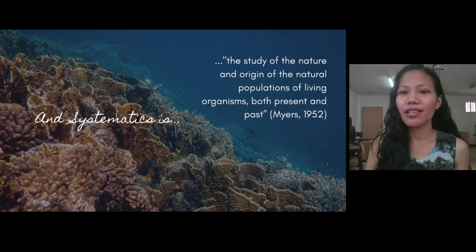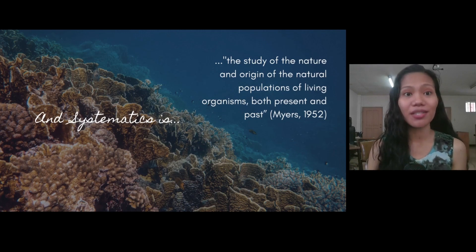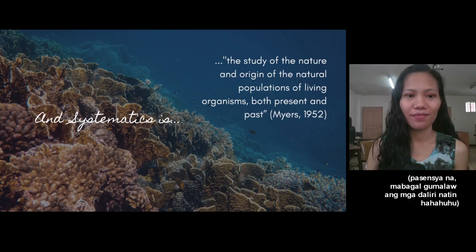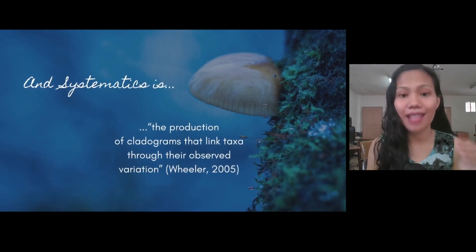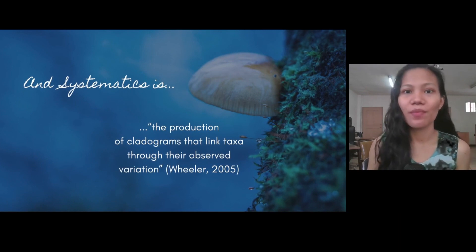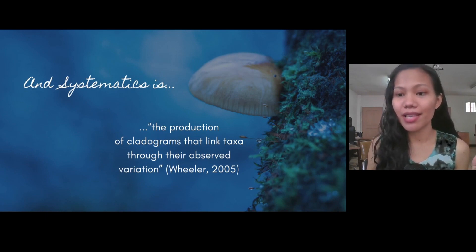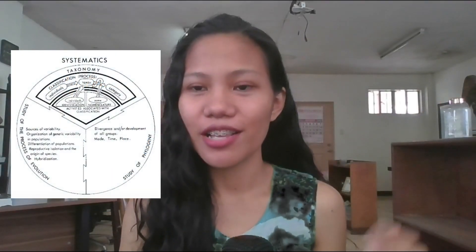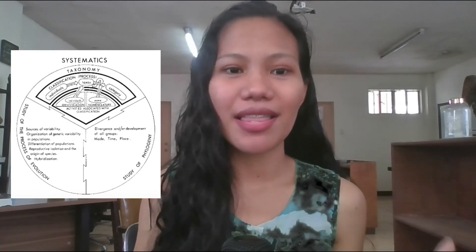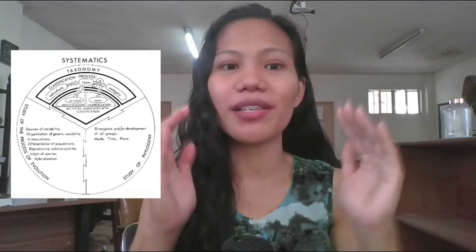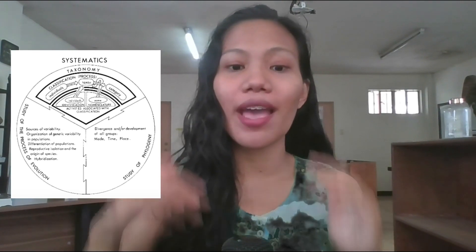According to Myers, systematics is the study of the nature and origin of natural populations of living organisms, both present and past. It also involves the production of cladograms that link taxa through their observed variation. Systematics is composed of pure taxonomy, the study of the process of evolution, and the study of phylogeny. In taxonomy, we look at individuals as a taxon, put them in a category, and give them names.